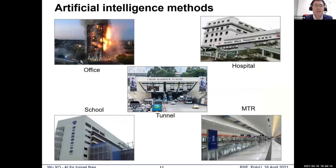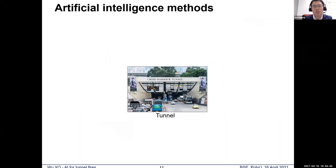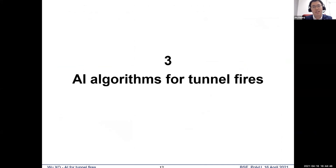We are using deep learning methods for smart city firefighting. We want to use these methods on different infrastructures such as office buildings, hospital buildings, tunnels, primary schools, and MTR stations. To begin with, we use the simpler structure, which is the tunnel structure. Let's see how we apply deep learning methods for tunnel firefighting.